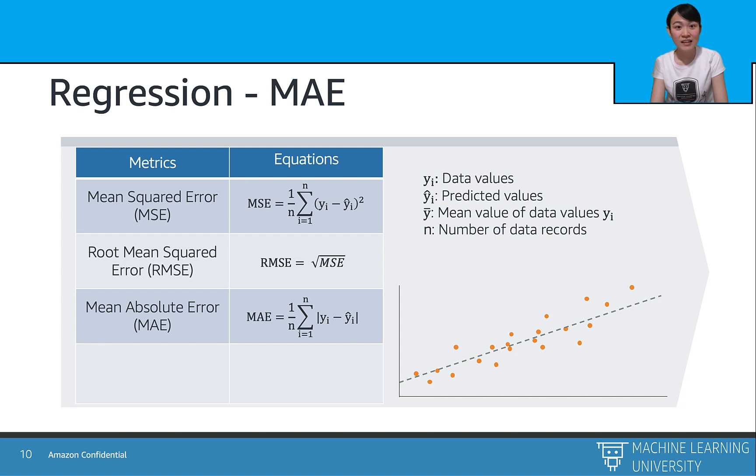Well, next is the mean absolute error or MAE, or we often call it the L1 loss. So MAE is the absolute difference between the target value and the value predicted by the model. And the MAE is more robust to the outliers and does not penalize the error as extremely as the MSE. So MAE is a linear score, which means all the individual differences are weighted equally. However, it is not suitable for applications where you want to pay more attention to the outliers.